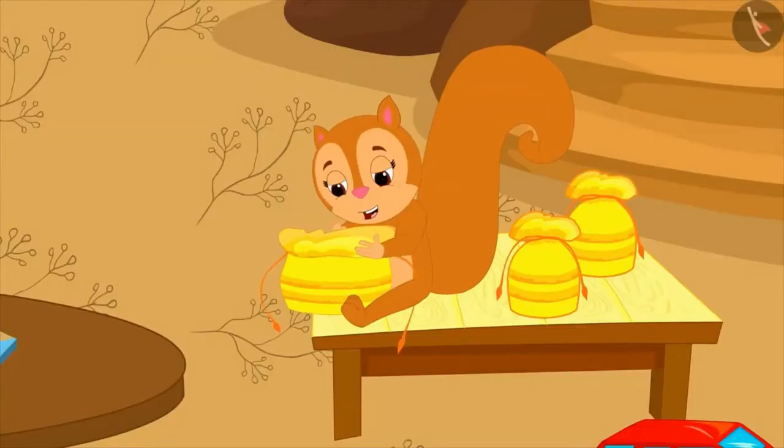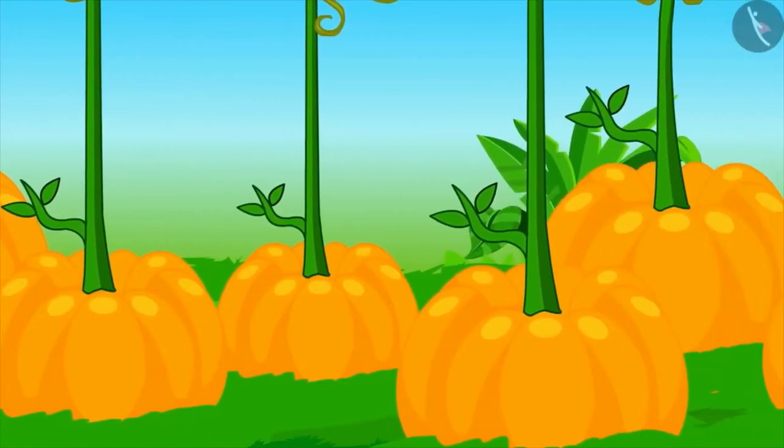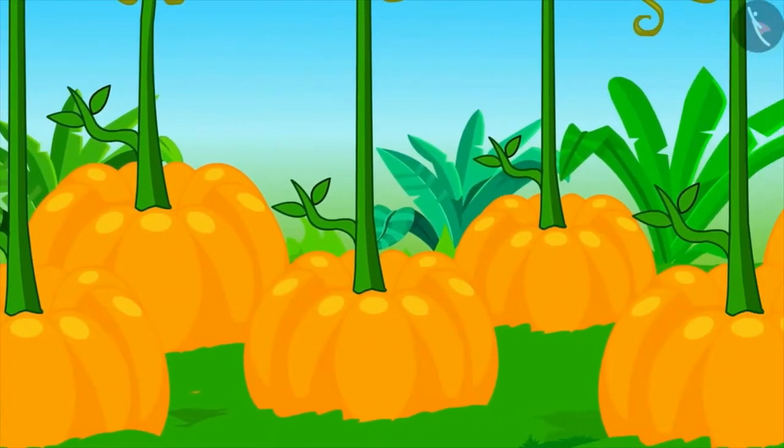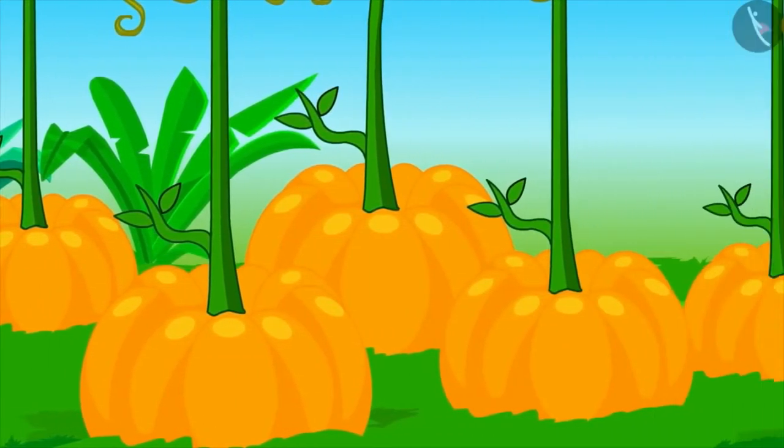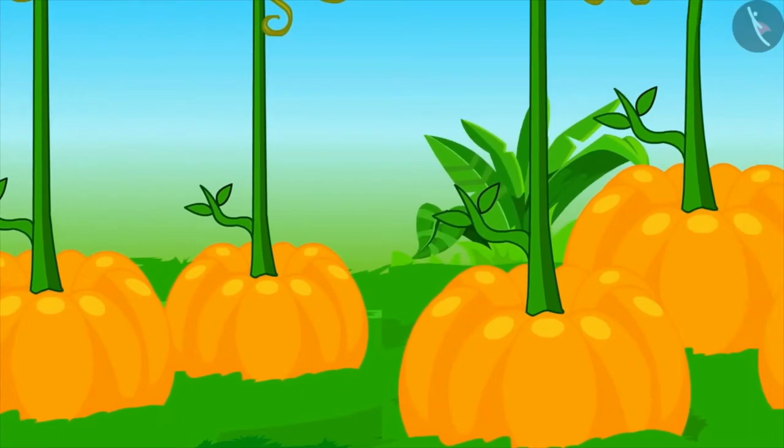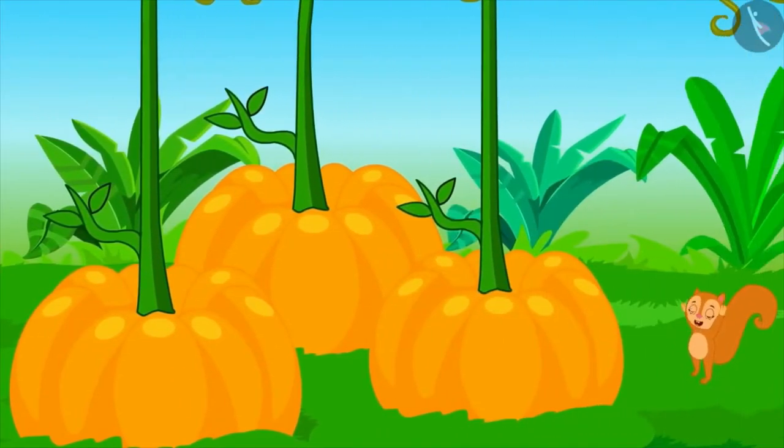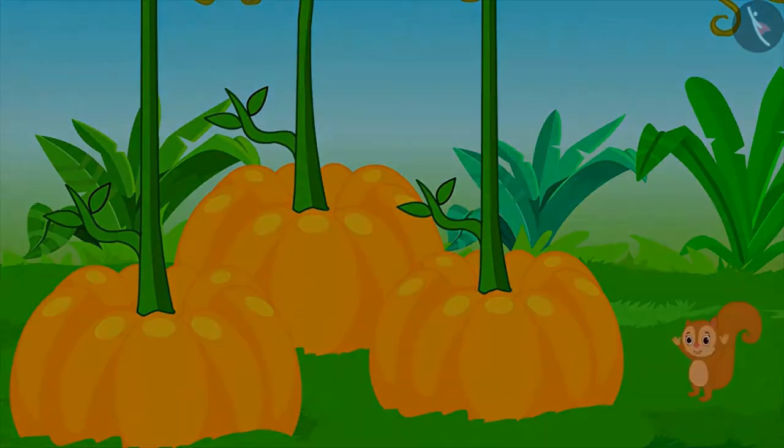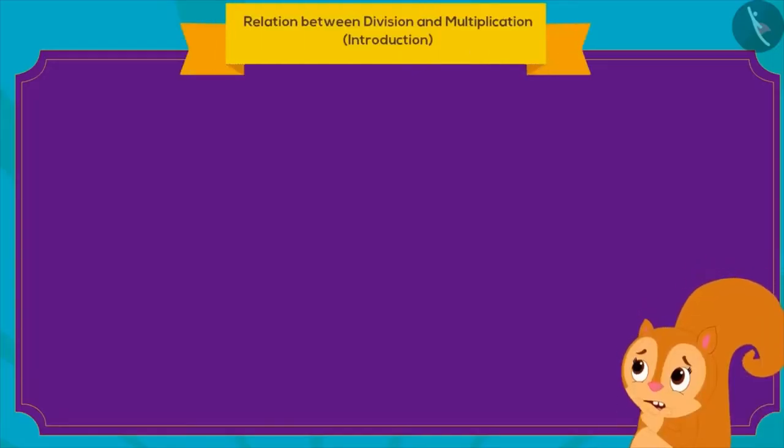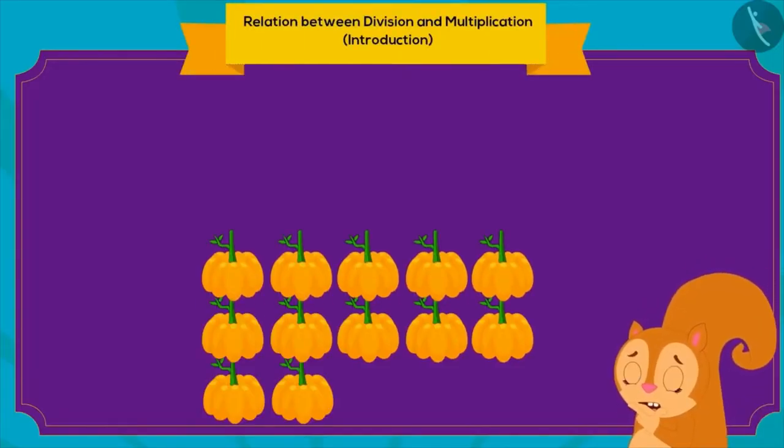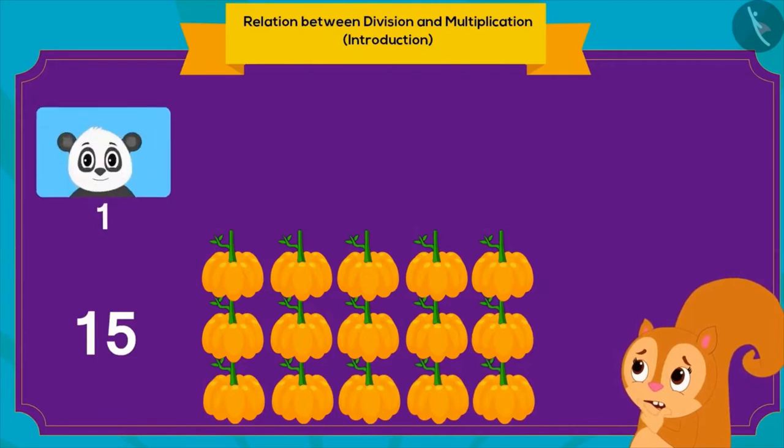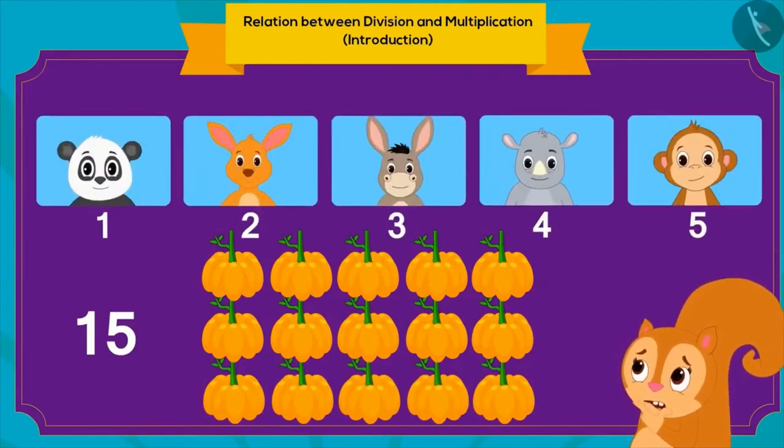Chanda first opened one pouch and found some pumpkin seeds in it. Very next day, she sowed those seeds. Within a few days, 15 huge pumpkins grew. Chanda was not able to believe her eyes. She had never seen a pumpkin of this size in her entire life. Chanda decided to divide the 15 large pumpkins among her five friends equally.